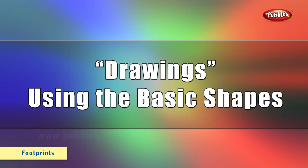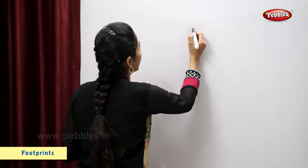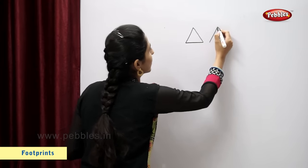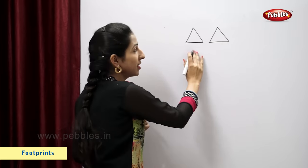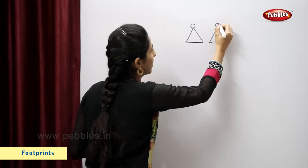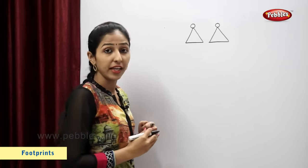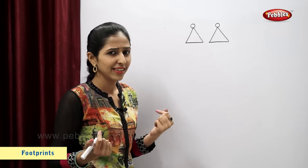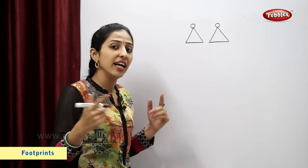Drawings using only the basic shapes. Making use of basic shapes, I am going to make some nice jewelry for my friend. Let's make. I will draw earrings using triangle and circle. Let's make bangles. Tell me students, what is the shape of a bangle? Right, that is circle. Let's make bangles.